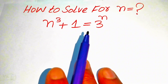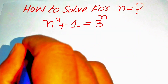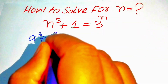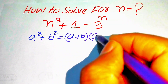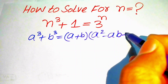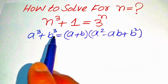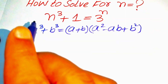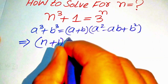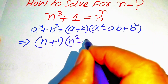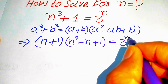The first step is to use the sum of cubes formula on the left-hand side. We know that a cubed plus b cubed equals a plus b times a squared minus ab plus b squared. Applying this formula, the left-hand side becomes n plus 1 times n squared minus n plus 1, and this equals 3 to the power of n.